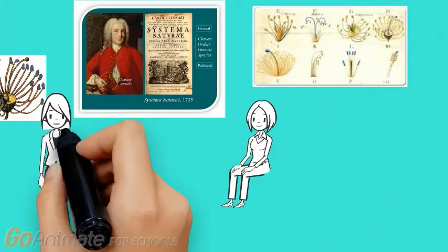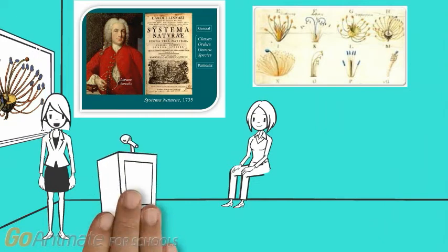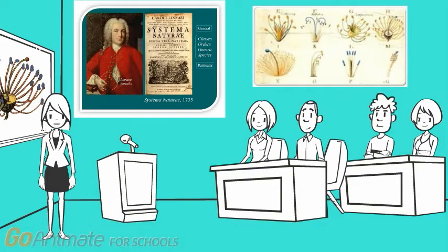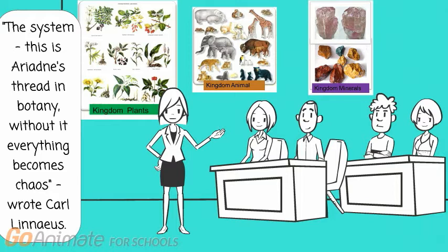In 1735, with the support of various scientists who highly estimated his ideas, Carl Linnaeus published the famous pamphlet Systema Naturae, one of his major works. Carl Linnaeus was one of the first to describe, arrange, and give scientific names to living things.